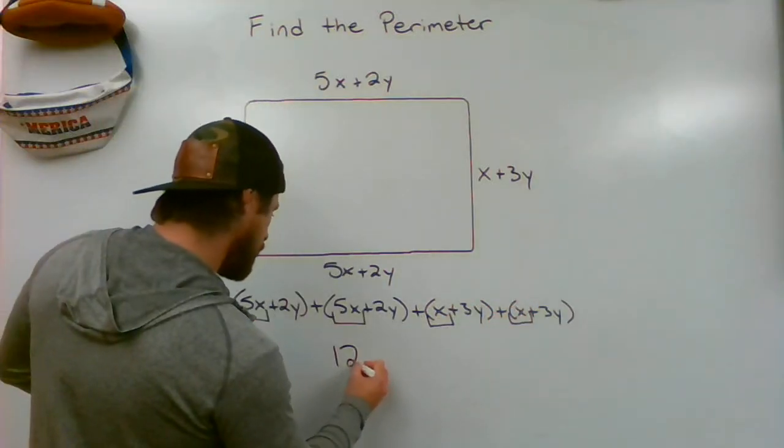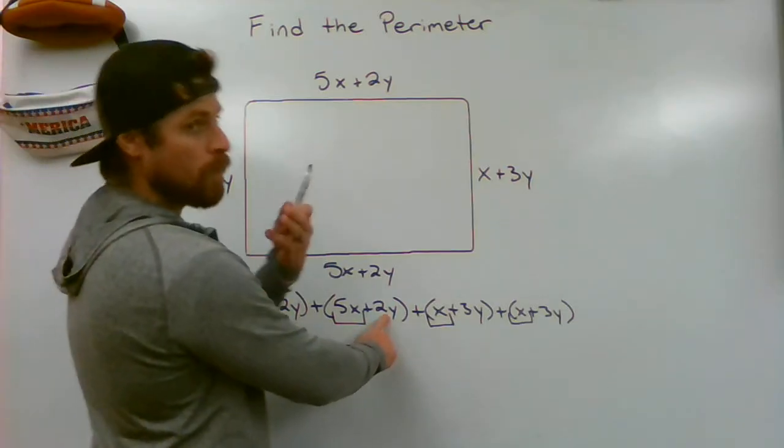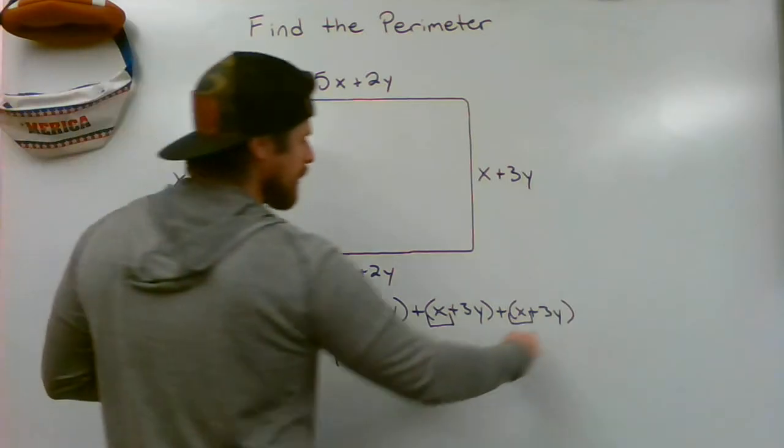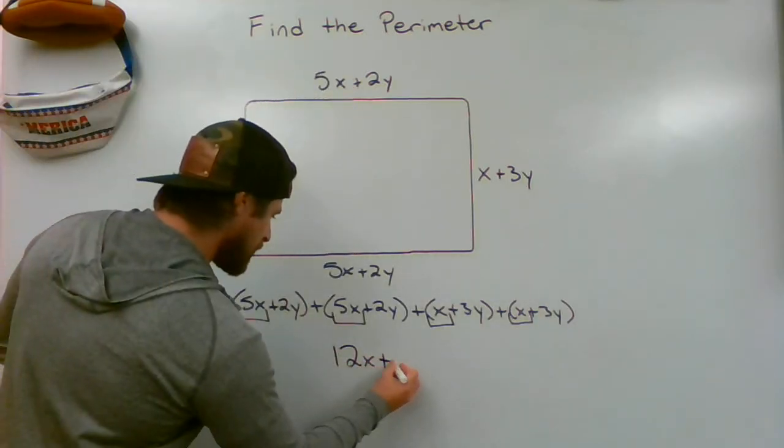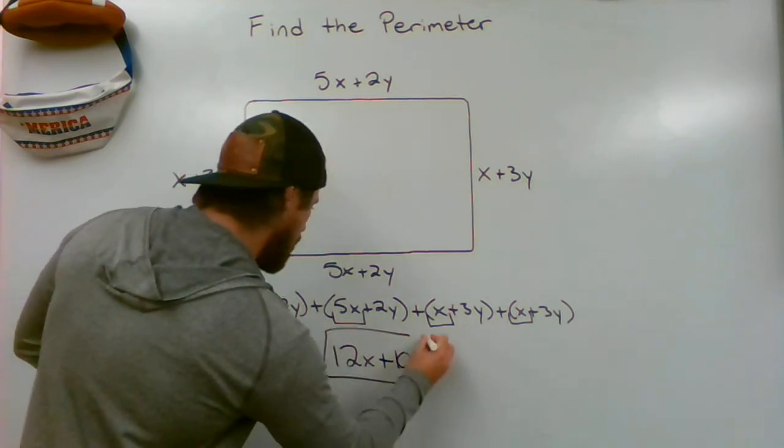So 12x, and then I have 2y plus 2y for 4y, plus another 3y, that would make 7y, plus another 3y, which makes 10y, positive 10y.